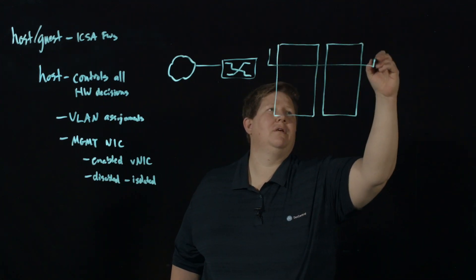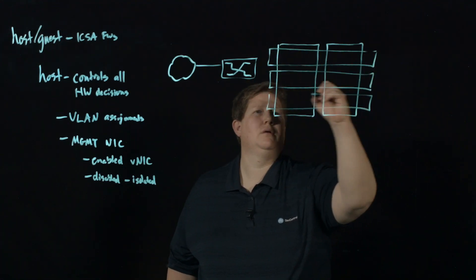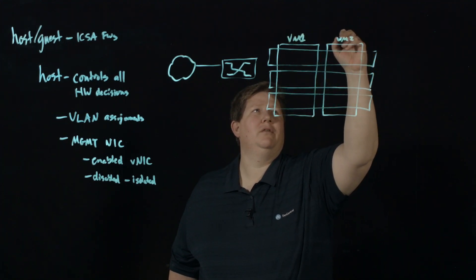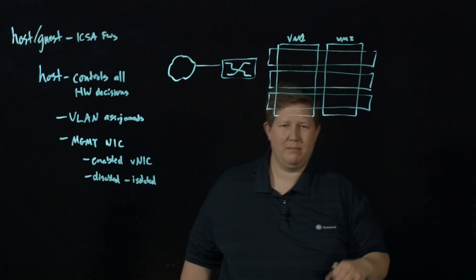And of course, these are running across, let's say, three blades. So I have VM1, VM2, which is my, say it's my finance guest and my marketing guest.